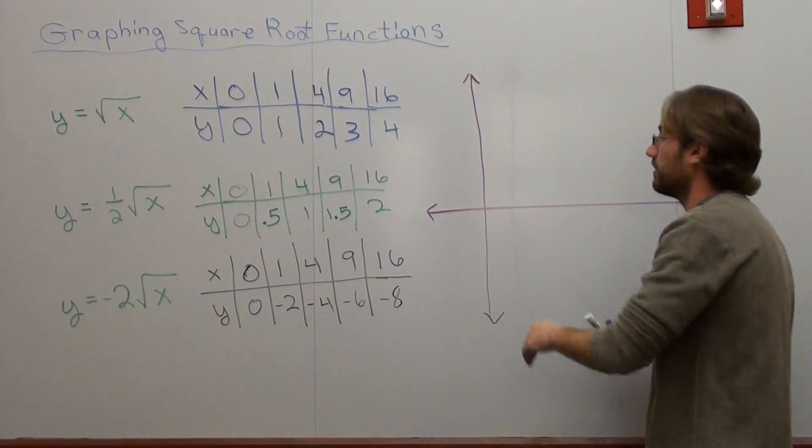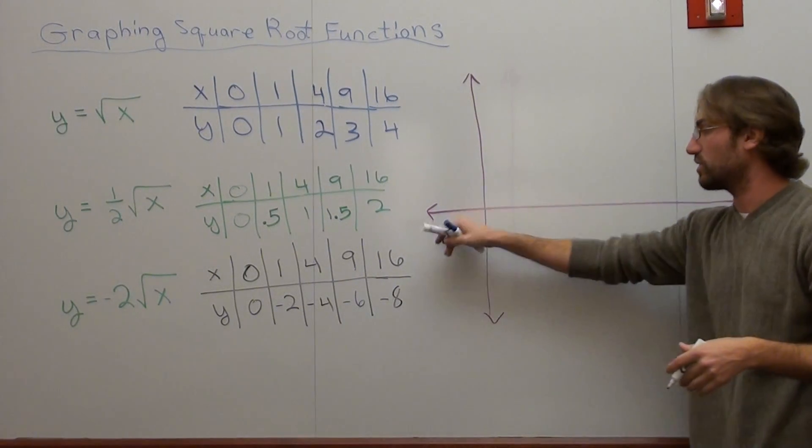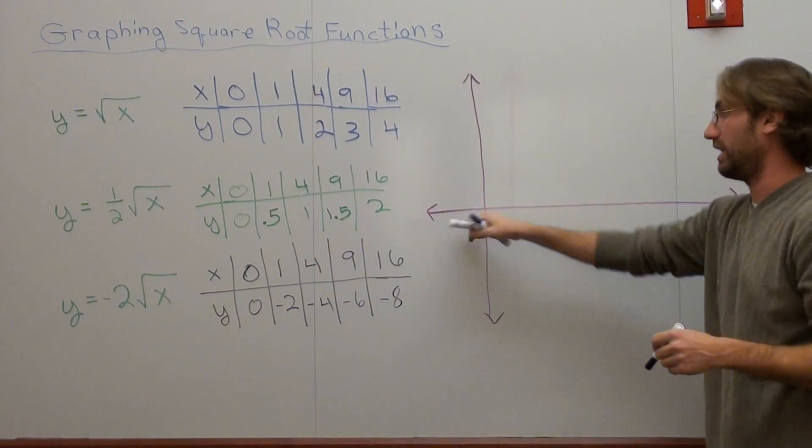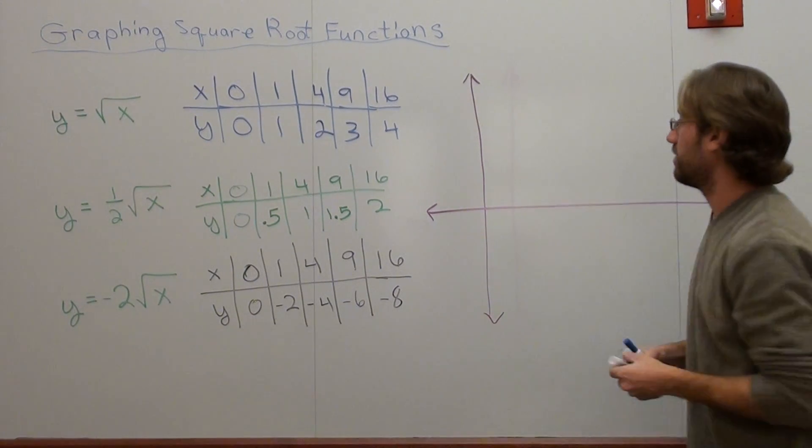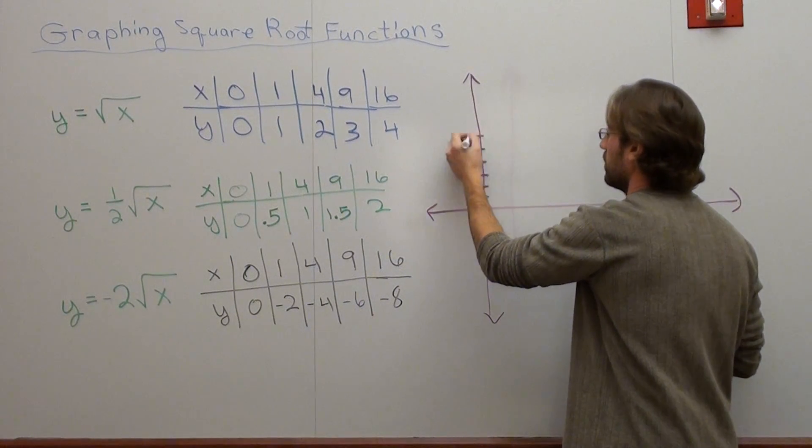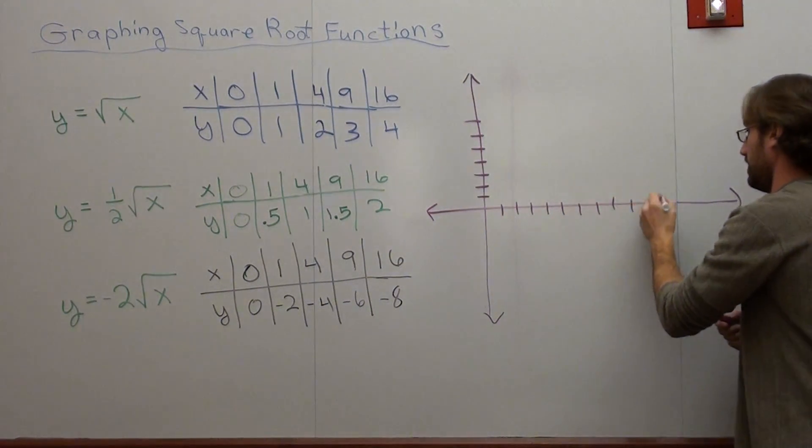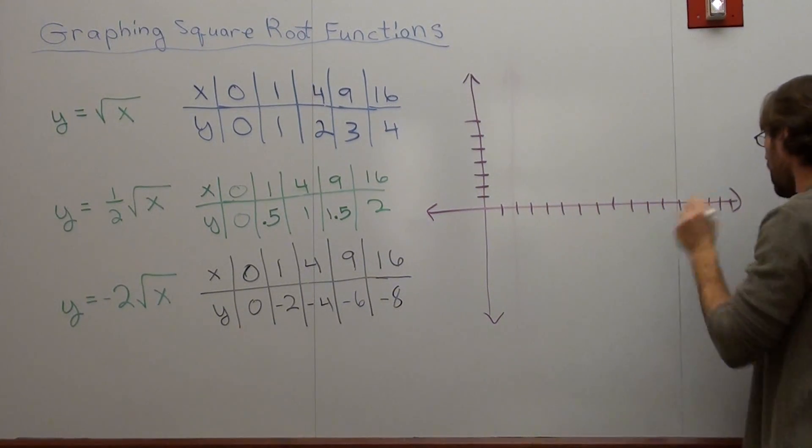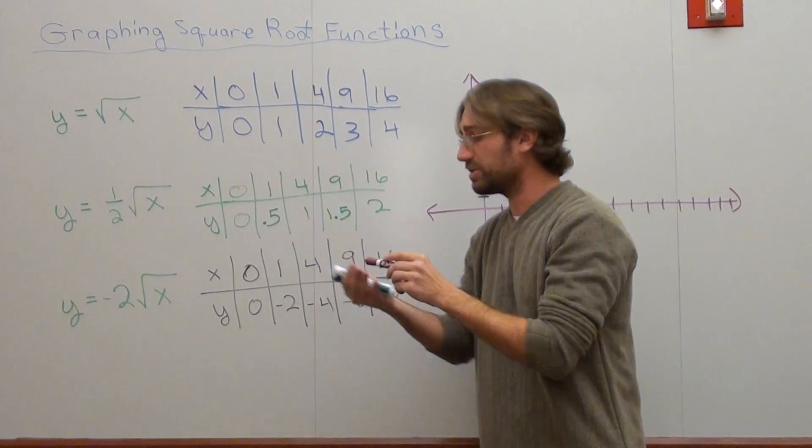I got my nice little graph here that I skewed over this way because I'm going to need more of these values. Not so many of those. I don't need any of those actually. So we'll go ahead and graph. Three, four, five, six, seven, eight, nine, 10, 11, 12, 13, 14, 15. Oh yes, I was able to fit it. Barely, but I did.